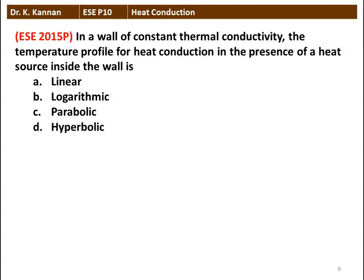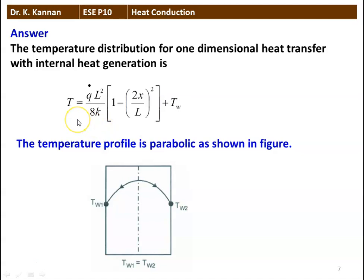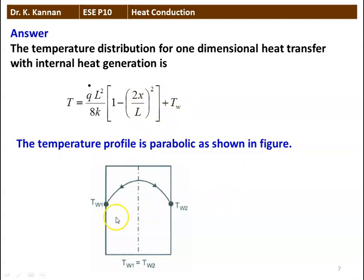Next question: In a wall of constant thermal conductivity, the temperature profile of heat conduction in the presence of a heat source inside the wall is: linear, logarithmic, parabolic, or hyperbolic? The correct answer is parabolic. The temperature distribution for one-dimensional heat transfer with internal heat generation is given by T = Q̇ · L² / 8K · (1 − 2x/L)² + T_w. The temperature profile is parabolic, where T_w1 = T_w2.